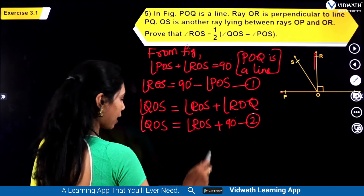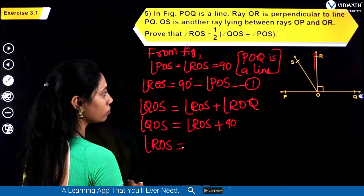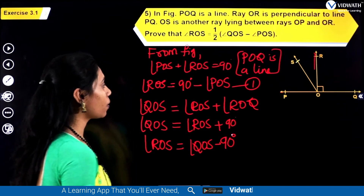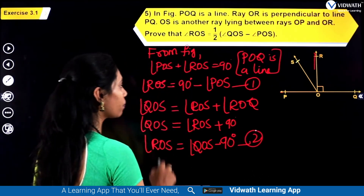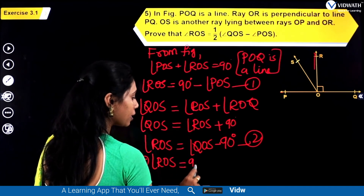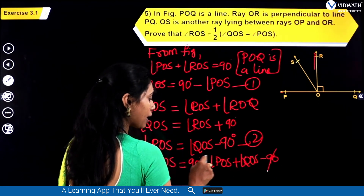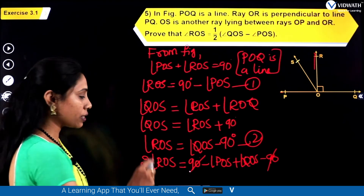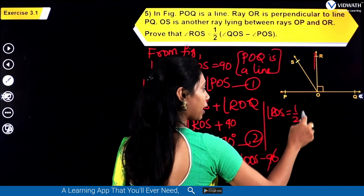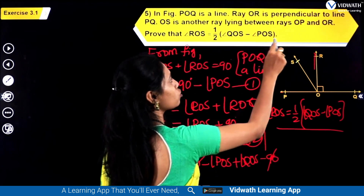From equation 2, angle ROS equals angle QOS minus 90 degrees. Adding equations 1 and 2: ROS plus ROS gives 2 times angle ROS equals 90 degrees minus angle POS plus angle QOS minus 90 degrees. The 90s cancel, leaving 2 times angle ROS equals angle QOS minus angle POS. Therefore, angle ROS equals one-half of angle QOS minus angle POS, which is what they asked us to prove.